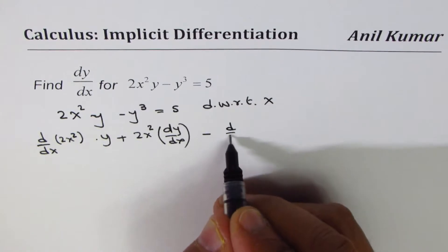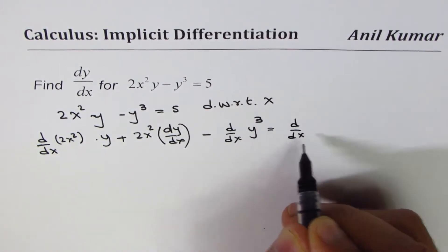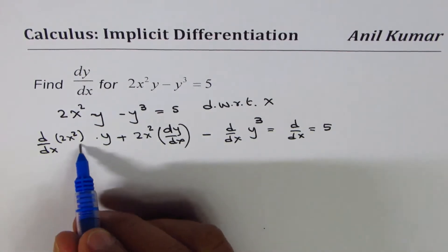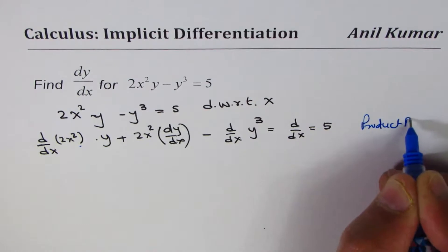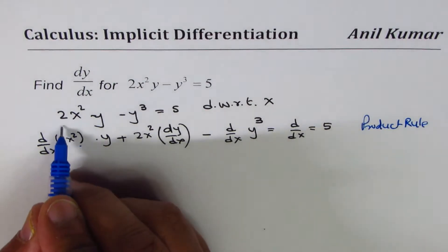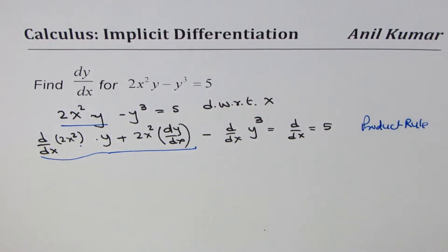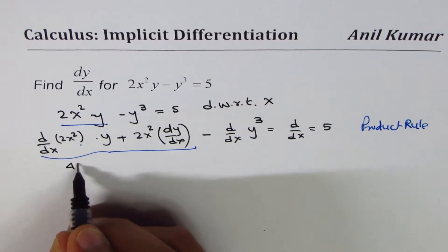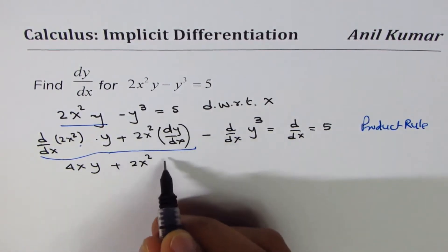Minus d/dx of y cubed equals d/dx of 5. We have applied the product rule for the first term, getting these expressions. Now, derivative of 2x squared is 4x times y, giving us 4xy plus 2x squared dy/dx.